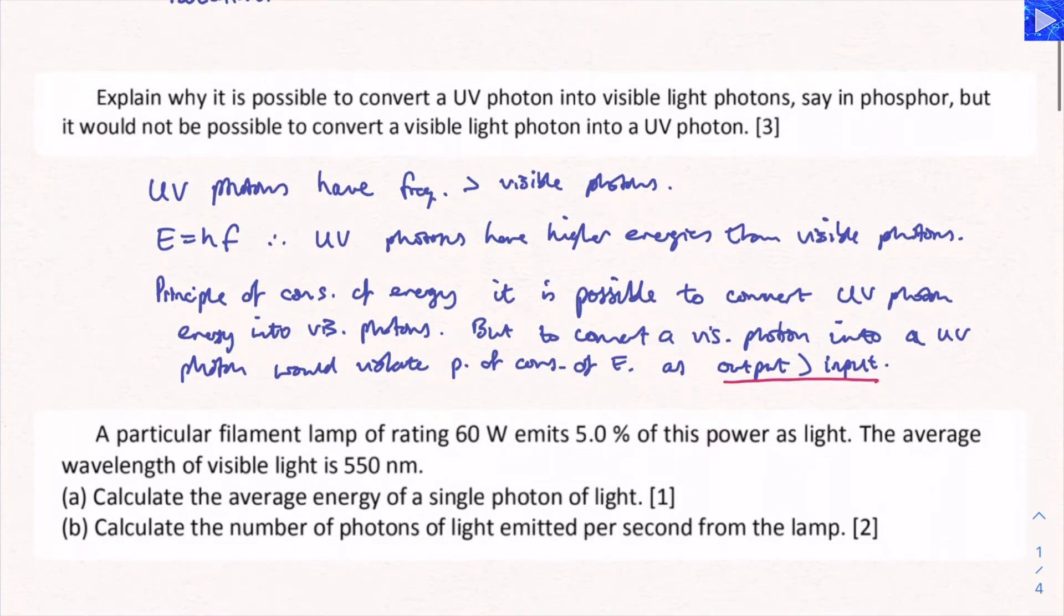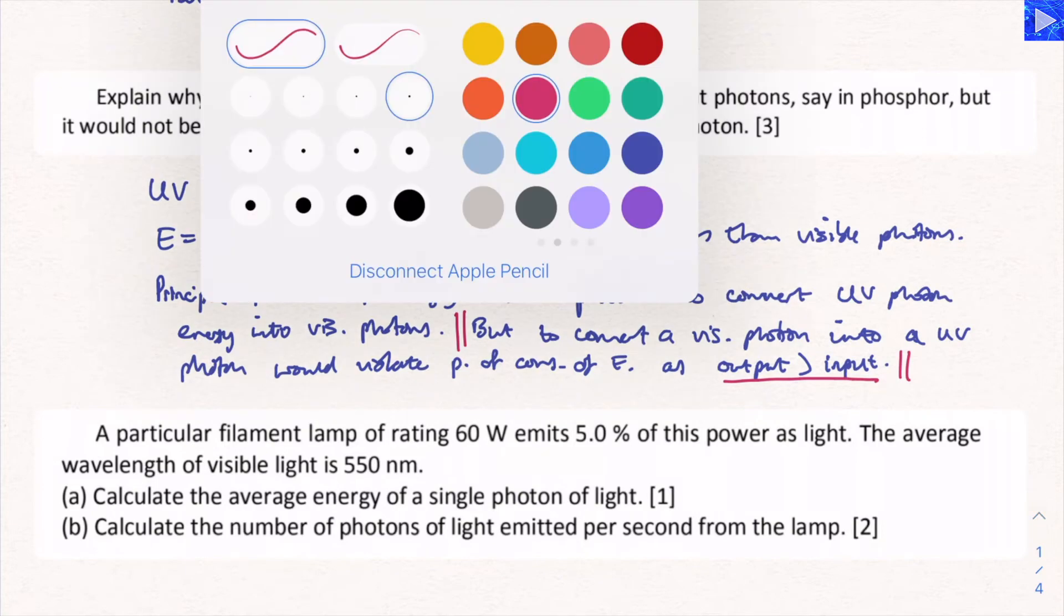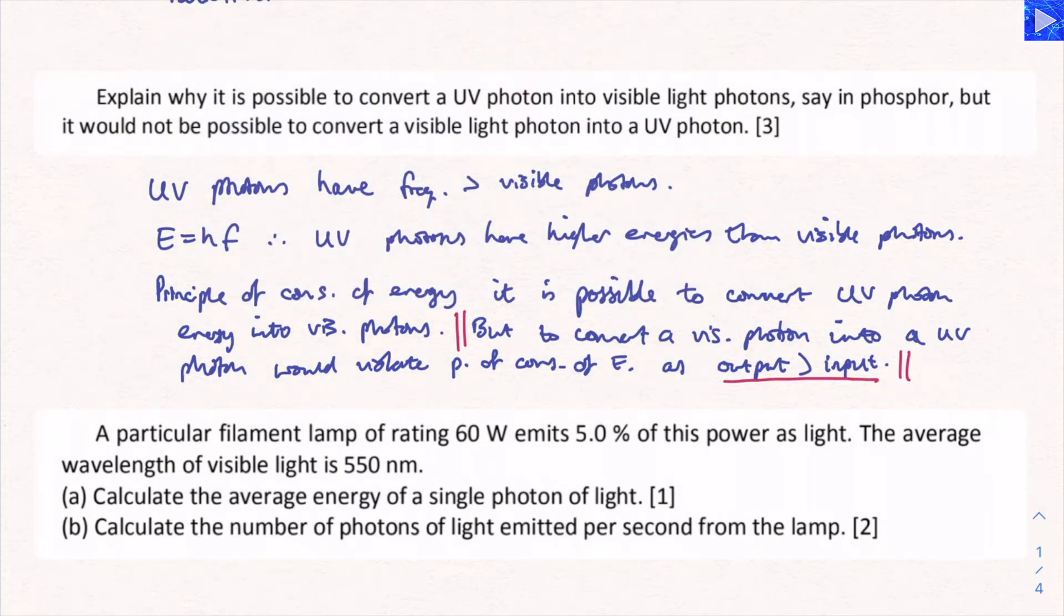You could word that differently. In an exam situation, as long as you understand the reasons, that's the key thing you want to know. You could probably say something like converting a visible photon into a UV photon would violate the principle of conservation of energy as the output would be larger than the input. That shows you understand all of the key principles, and an examiner would see that you know which principles are important. Let's go on to the next question.